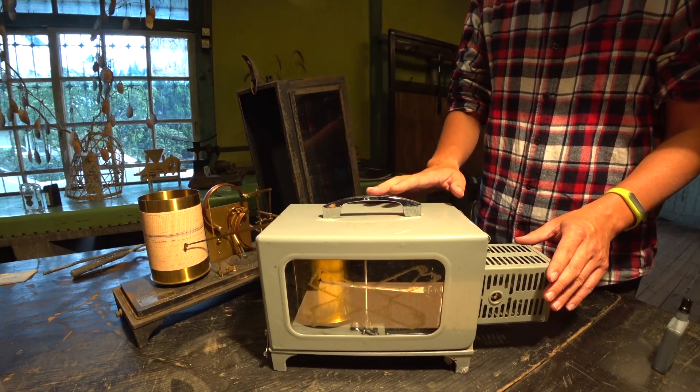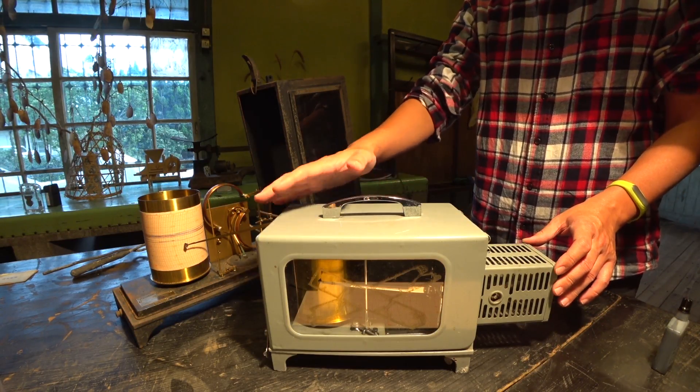後面這一座溫度記錄器是比較古老的。它跟這個比較新型的、大概1970年代生產的溫度記錄器,裡面的構造是大同小異,運作原理也幾乎都是相同的。它的外觀就是一個金屬的盒子。